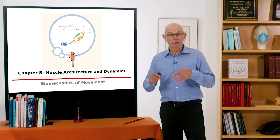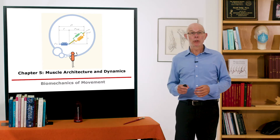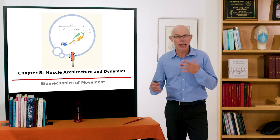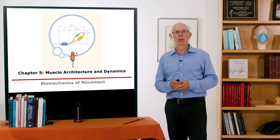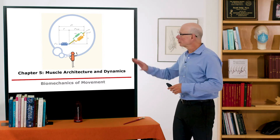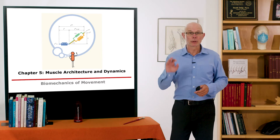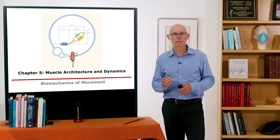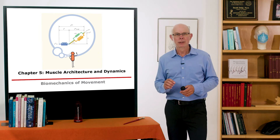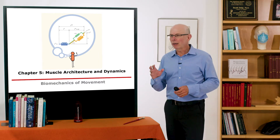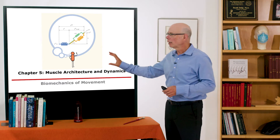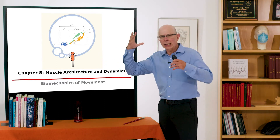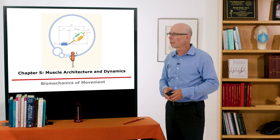Today we'll focus on chapter five and build up a mathematical model to describe muscle and tendon and how they interact to generate force. While the model we'll use is simpler than real muscle, it captures many of the salient features of muscle-tendon interaction. Think about muscle like the hill-type model of muscle.